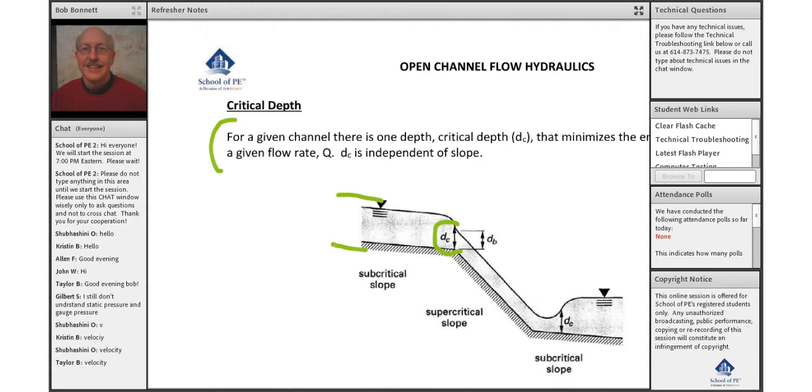here comes our flow that's then by gravity falling over. It crosses below critical depth and becomes supercritical flow because it's below critical depth.